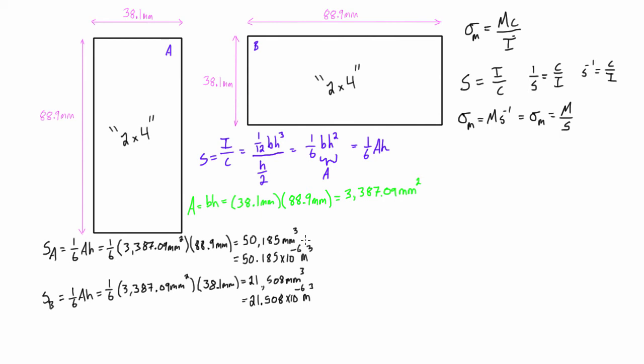So now let's say that we just know what the internal moment is in this section. And let's say that it's, let's just say that we're giving ourselves an internal moment of 50 newton meters. Then if we want to figure out what our max stresses are for orientation A and orientation B,